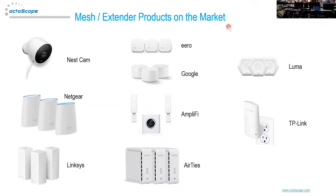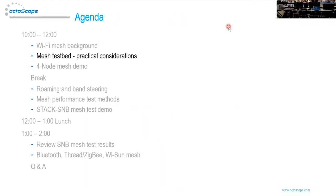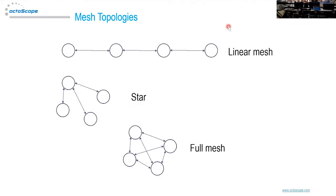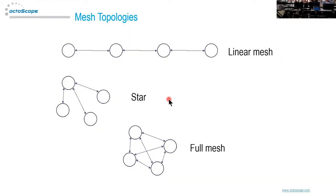Meshes come in different topologies. They can be linear — like in a train station with APs chained together. They can be star topology — like most cellular networks, with one central node and nodes around it. They can also be full mesh, where every node sees every other node. We'll focus mostly on full mesh since it is a superset of everything else.